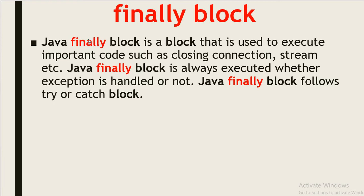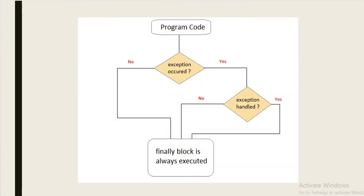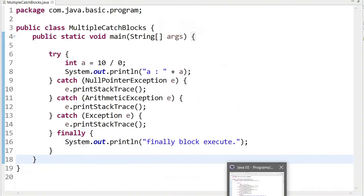The finally block is a block used to execute important code such as closing a connection or stream. The Java finally block is always executed whether the exception is handled or not, and it follows the try or catch block — we cannot declare a finally block alone, it must be used with a try block. From the flowchart: whether an exception occurs or not, and whether it is handled or not, the finally block always executes. We can write cleanup activity code inside the finally block.